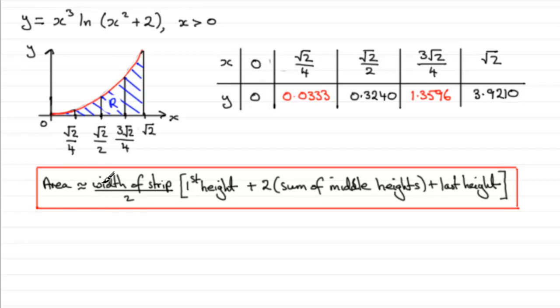The area is approximately equal to the width of a strip, that's this distance across here, divided by 2 and then you do the first height. Plus twice the sum of all the middle heights and then plus the last height. And try and remember this method of working out the trapezium rule.